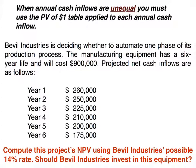What do we do when it's not an annuity — when the payments are not equal? In that case, we have to use the present value of lump sum table. Here, Bevel Industries is deciding whether to automate one phase of its production process. The manufacturing equipment has a six-year life and will cost $900,000. Projected net cash inflows for years one through six are all differing amounts.